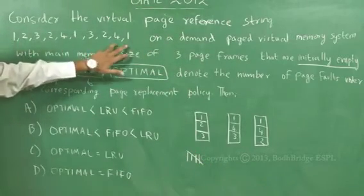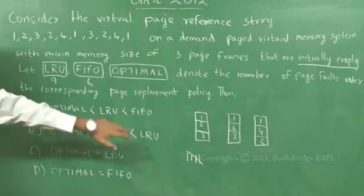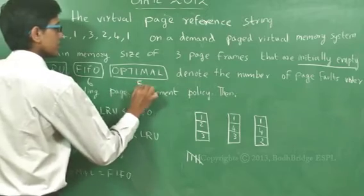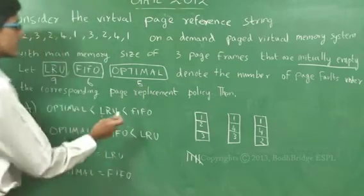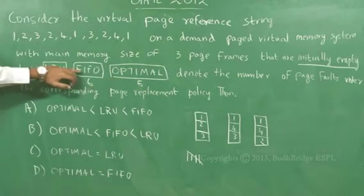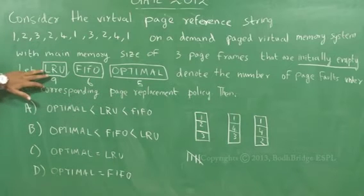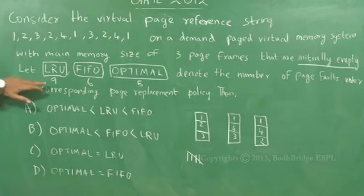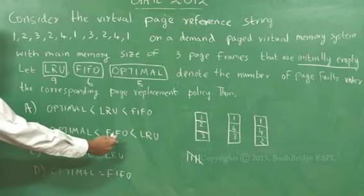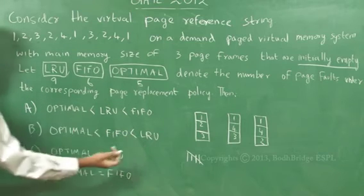4 is already there, 1 is already there. So optimal has 5 page faults. To summarize: Optimal has 5 page faults, FIFO has 6 page faults, and LRU has 9 page faults. Therefore, option B — Optimal < FIFO < LRU — is the correct answer.